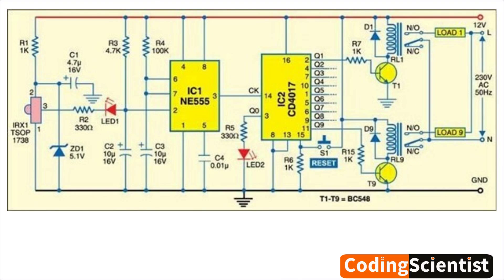When the remote is used to control one device, the next device in the sequence is turned on. The circuit starts with a transformer, X1, that steps down the 220V AC mains voltage to a lower voltage, typically around 9V AC. This AC voltage is then rectified by a bridge rectifier, D1–D4, to produce a DC voltage. A voltage regulator, IC2, further stabilizes this DC voltage to the specific level required by the circuit components.